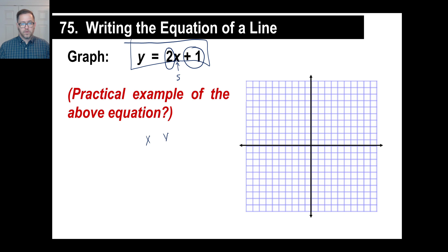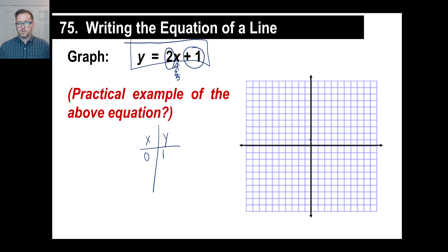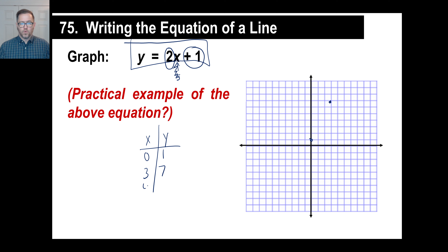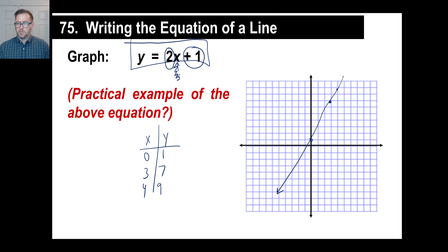That's what this is all about — this is not some random thing. If zero kids show up, X is zero, so I get two times zero plus a buck. The point is (0, 1): zero over and one up. If three kids show up, I make $2 a kid times three kids — $6 plus one — $7. If four kids show up, I get four times two — $8 plus one — $9. You're plopping in values for X, getting an answer for Y, and connecting those points makes a perfectly straight line.